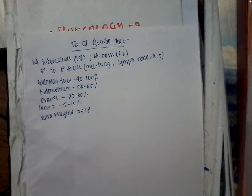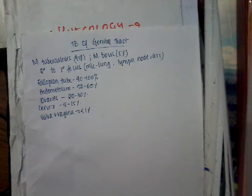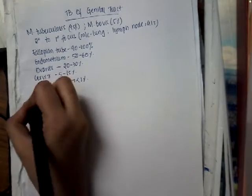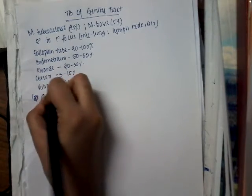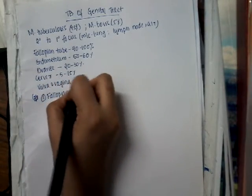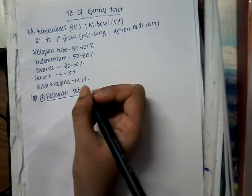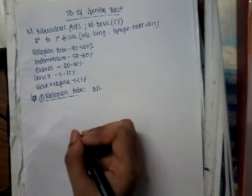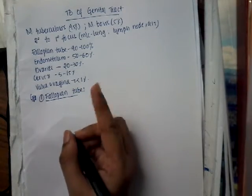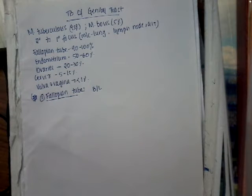The pathology of the tuberculosis bacilli is similar to that of normal pathology in the lung. Regarding the fallopian tube specifically: involvement of the tubes is nearly 100%, it is bilateral, and most commonly secondary to the primary focus — most commonly the lung or lymph node. The tubal mucosa acts as a nidus for blood spread.